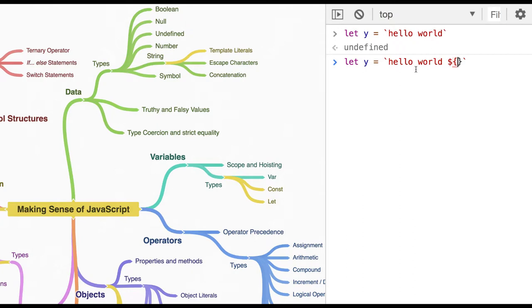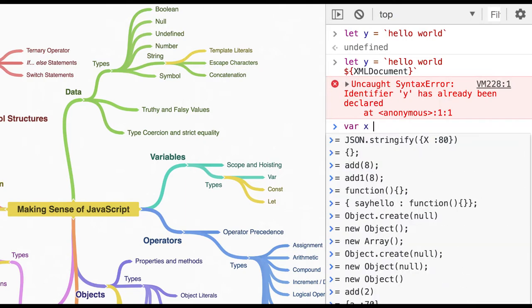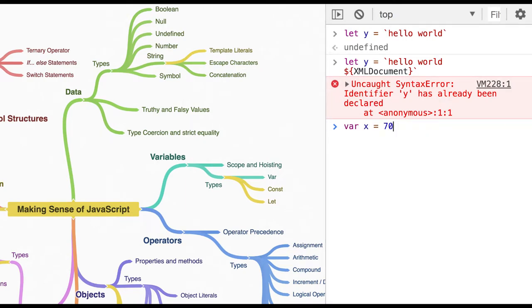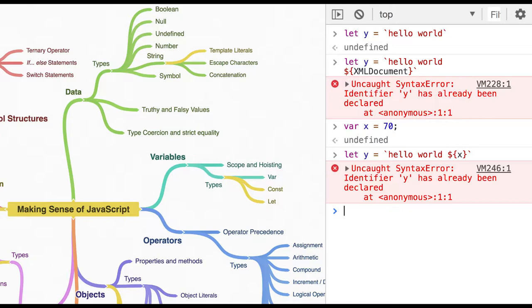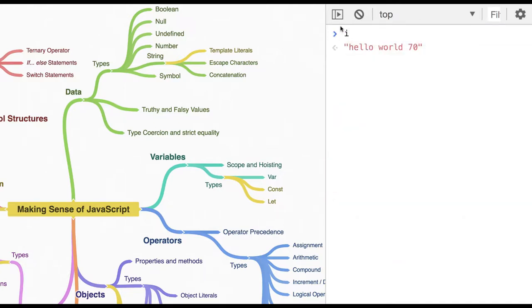Now we can put your dynamic value here. So x is like 70, right? Okay, identifier y has already been declared because that is a problem with the console. If you have declared some variable, then you cannot declare that again on the same console when you are using these keywords. So now you can see hello world 70. You don't need to use a concat operation with the plus. That is string literals added in ES6.